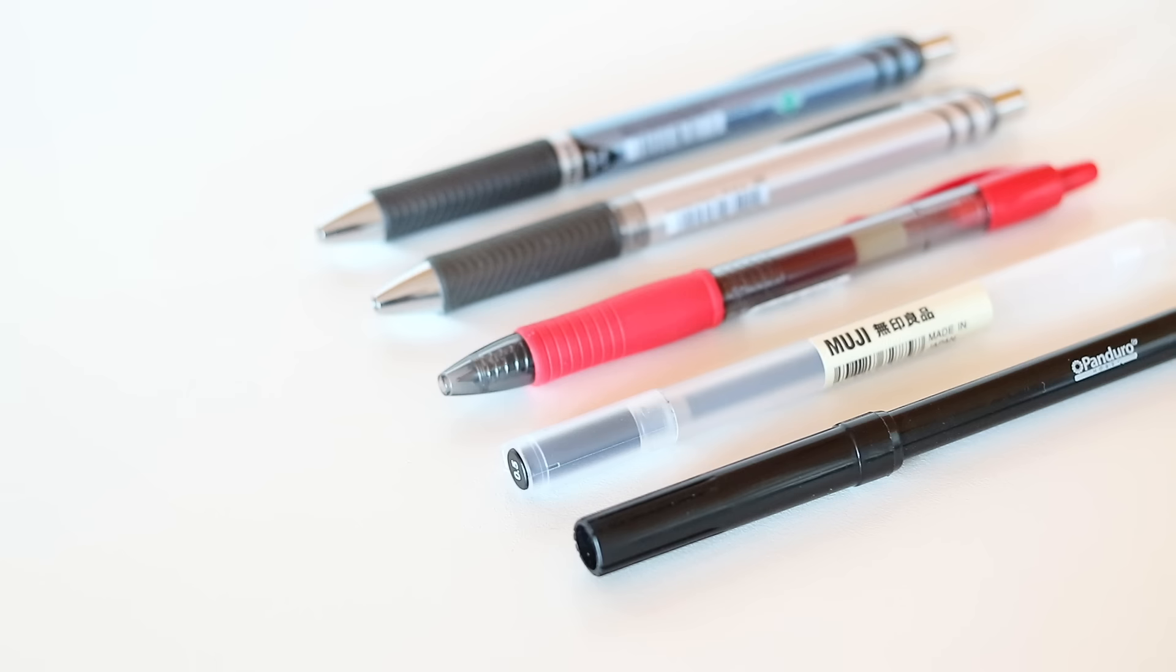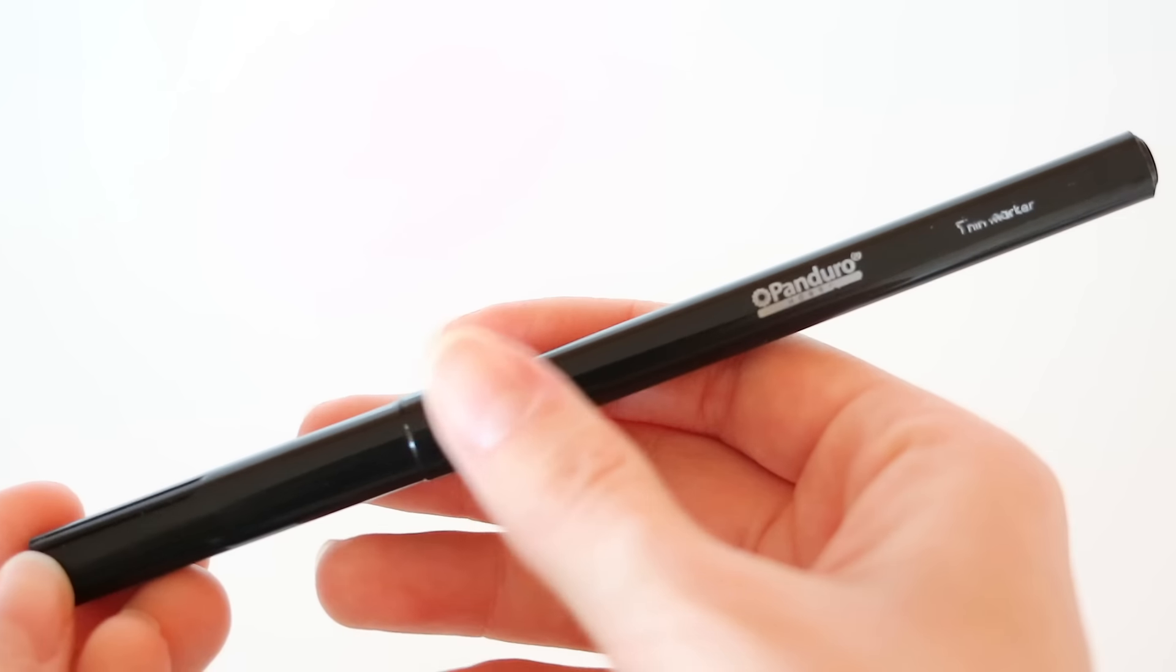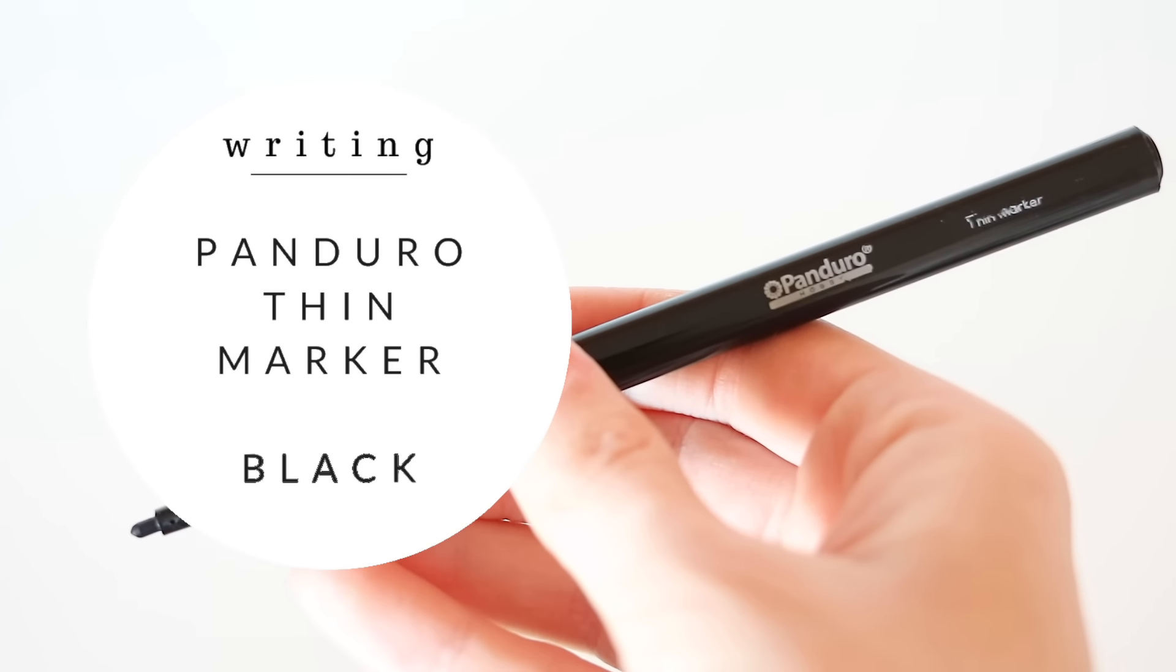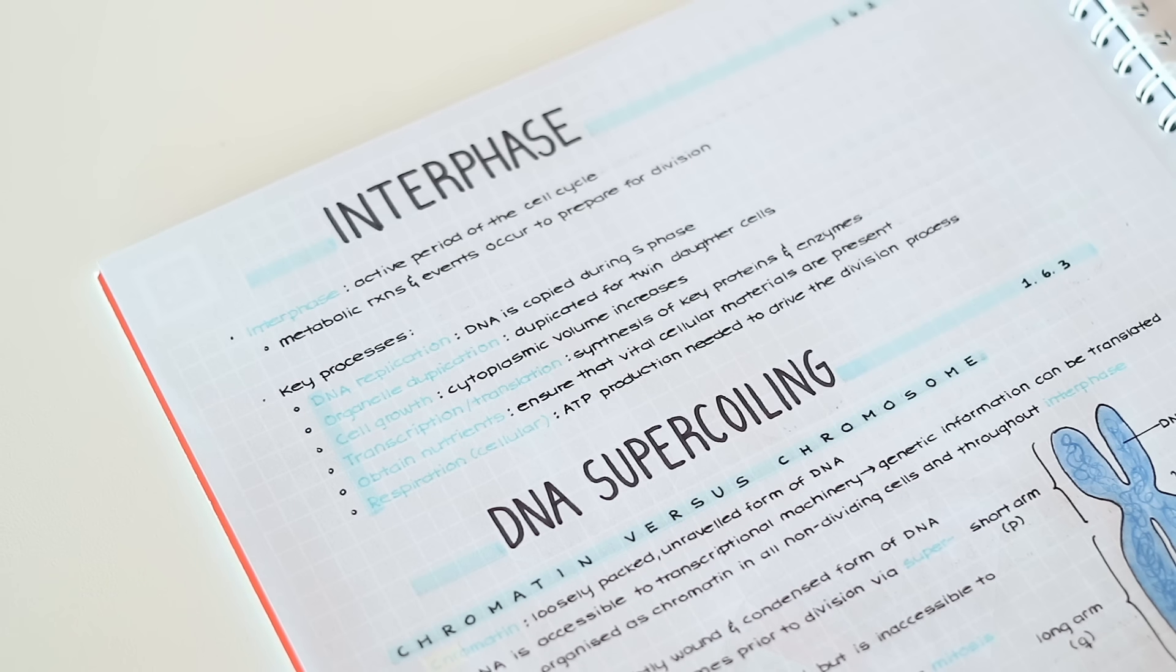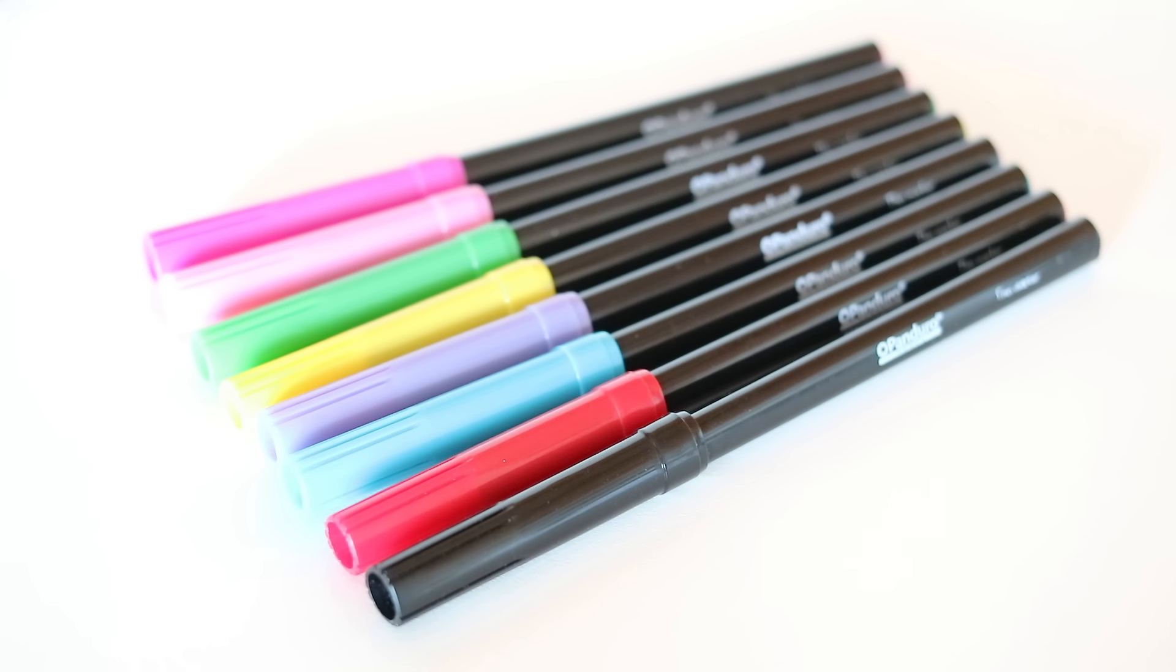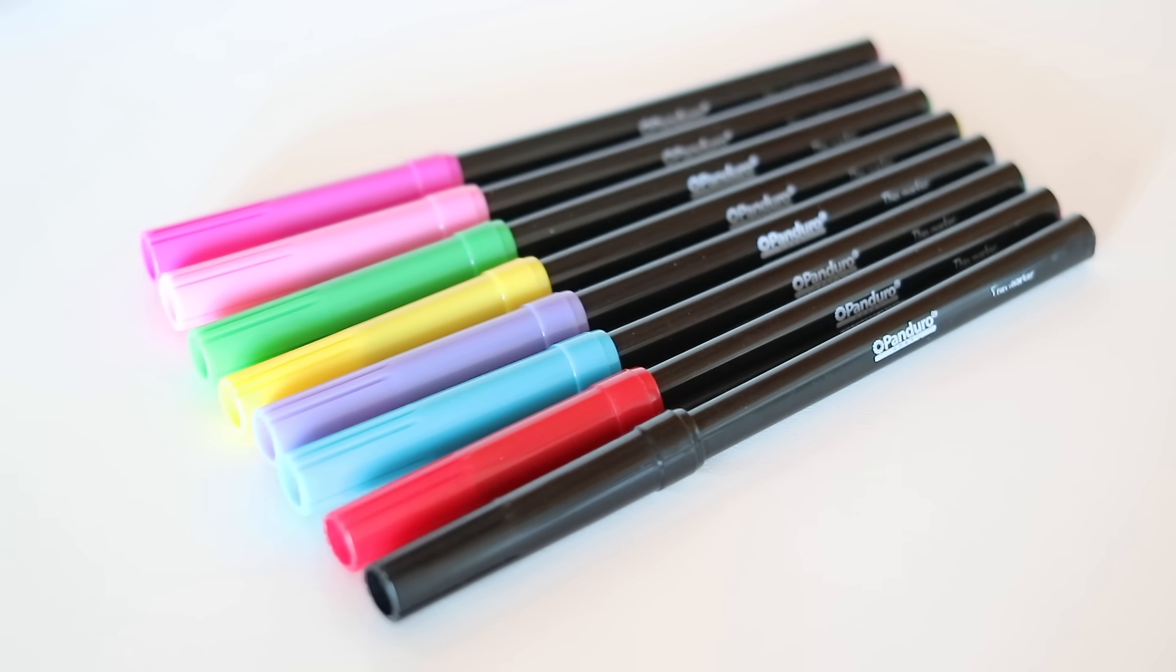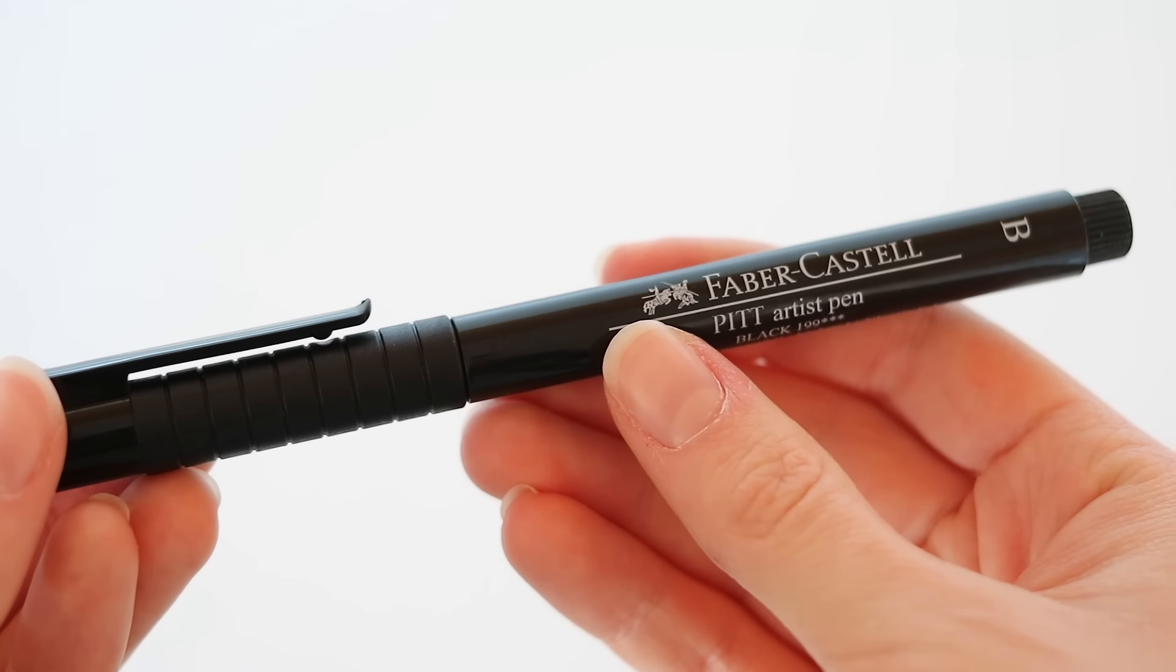Next up are my favorite pens for writing. The first pen is this one from a store called Pandoro. It's just a regular black felt tip pen and I use it for writing the headers of my notes. It's part of a larger pack of colors and since it is the store's generic brand, it's unfortunately not possible to get if you don't live in a country that has a Pandoro store.